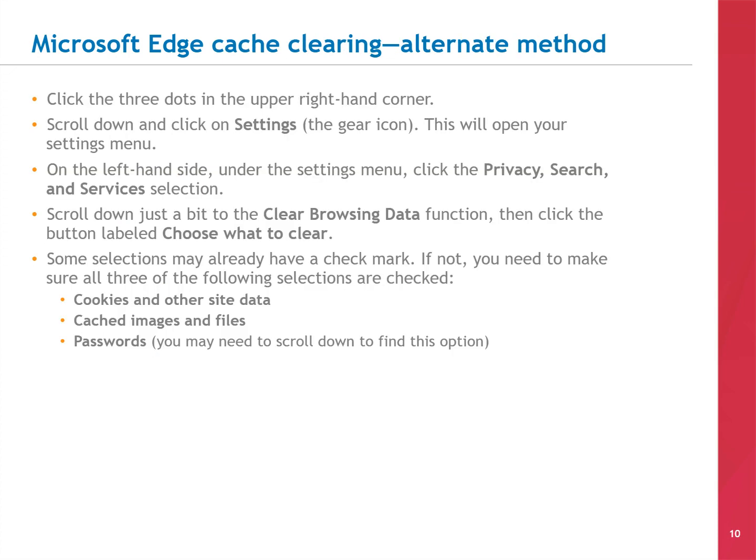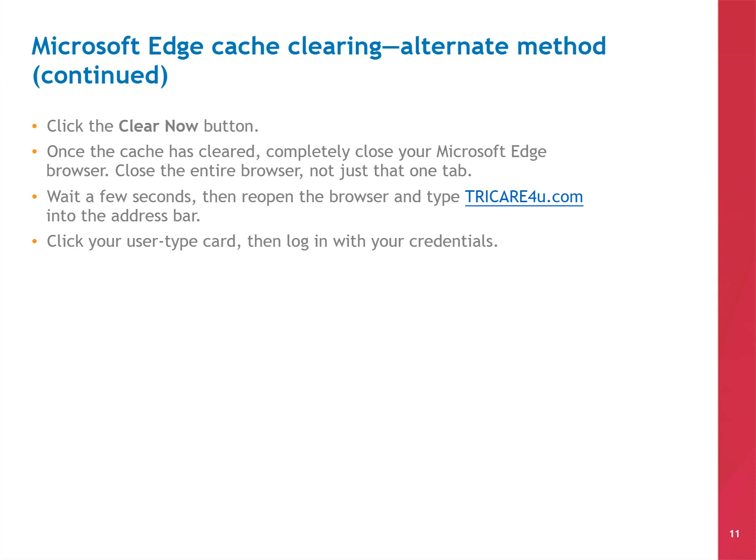There's an alternate way to clear the cache on a Microsoft Edge browser. Start by clicking the three dots in the upper right-hand corner. Scroll down and click on SETTINGS, the gear icon, to open your SETTINGS menu. On the left-hand side, under the SETTINGS menu, click PRIVACY SEARCH AND SERVICES. Scroll down a little bit to the CLEAR BROWSING DATA function, then click the button labeled CHOOSE WHAT TO CLEAR. Make sure these three selections are checked: Cookies and Other Site Data, Cached Images and Files, and Passwords. You may need to scroll down to find Passwords. Then click the CLEAR NOW button.